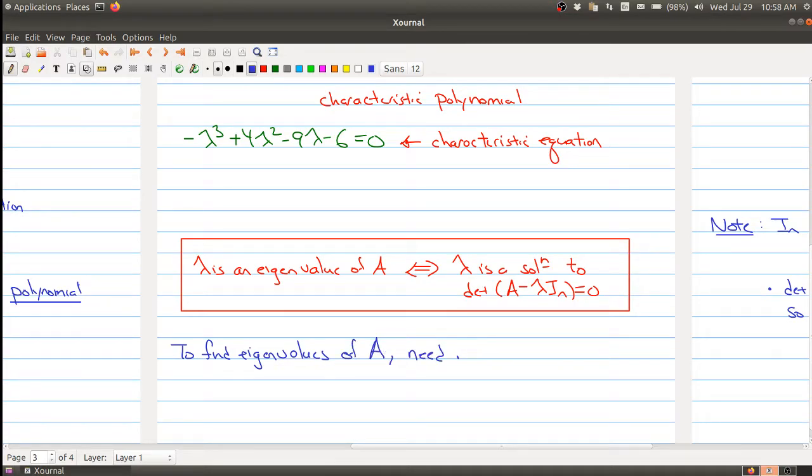So negative lambda cubed plus 4 lambda squared minus 9 lambda minus 6 equals 0. But the one downside is that it can be hard to find roots. In fact, lots and lots and lots of mathematics is devoted to this particular problem. How do you find roots of a polynomial?